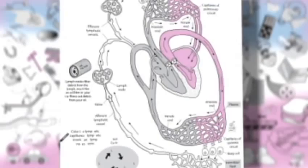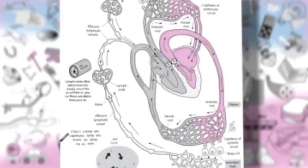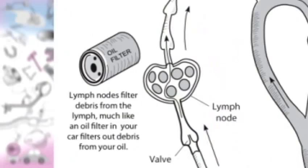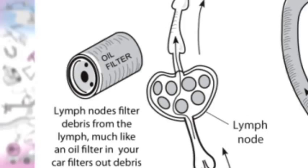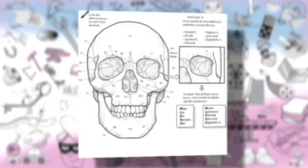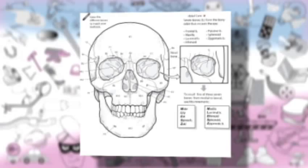Another example is found inside the lymphatic system, where there are many lymph nodes. We compare the lymph node to an oil filter — just as an oil filter filters out debris from the oil in your car, a lymph node filters out debris from the fluid referred to as lymph. Another key feature of the book is the use of mnemonics throughout, helping students remember key anatomy and key bones. In this case, we have bones of the orbital complex in the orbit of the eye.